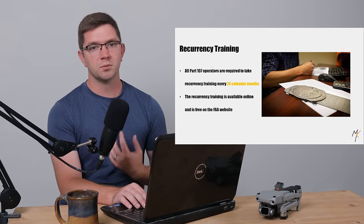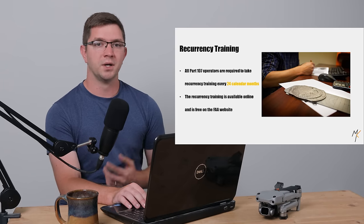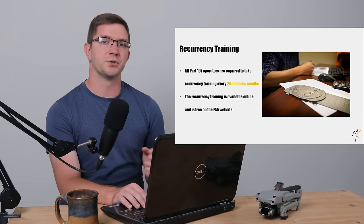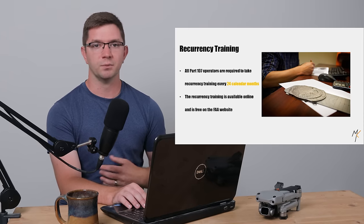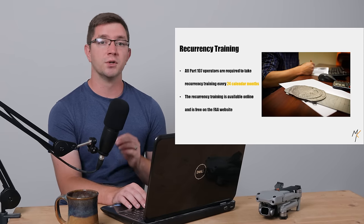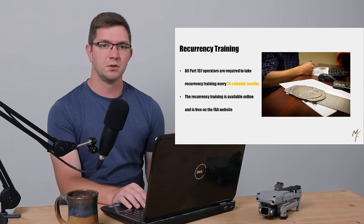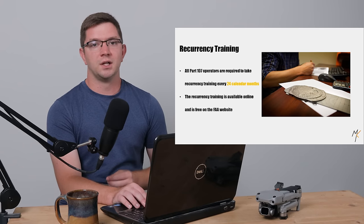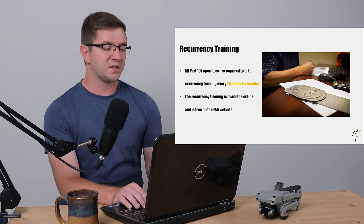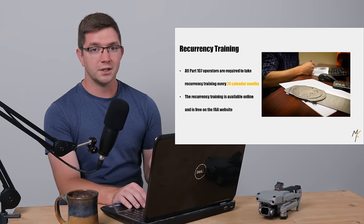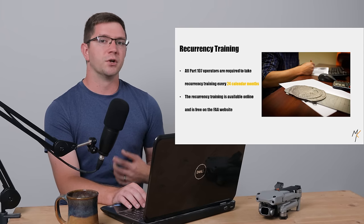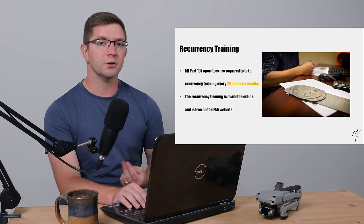Once you've successfully completed the Part 107 exam, you'll fill out some forms online and be mailed your official Part 107 license. From there, all you'll be required to do is recurrency training every 24 calendar months — two years — which you can do online at home for free on the FAA's website. Once you've passed this exam, you do not have to take it again. You'll just be required to do recurrency training online every two years.